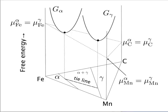Let us extend this to a ternary system - we have iron, manganese and carbon. Free energy curves become free energy surfaces, which are difficult to draw in three dimensions. To find equilibrium we have a tangent plane touching both those free energy surfaces, and where it touches defines a tie line because the free energy of all the components is then identical in both phases. Can you see that the tie line is no longer unique? You can rock that tangent plane and still maintain contact with the free energy surfaces, so you can generate an infinite set of tie lines at constant temperature defining the alpha plus gamma phase field.